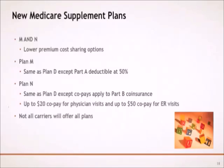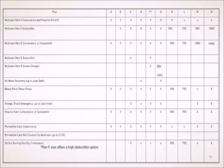Plans M and N are new Medicare Supplement Plans with lower premiums but with some cost-sharing features. Plan M has the same benefits as Plan D, except Plan M pays 50% of the Part A deductible where Plan D pays 100% of the Part A deductible. Plan N also has the same benefits as Plan D, except Plan N has co-payments of up to $20 for office visits and up to $50 for emergency room. Not all insurance companies offer both Plan M and Plan N.